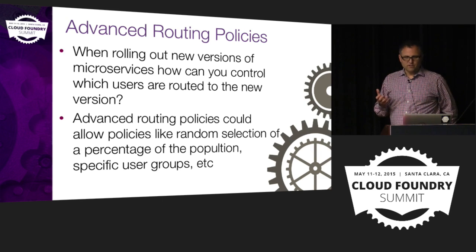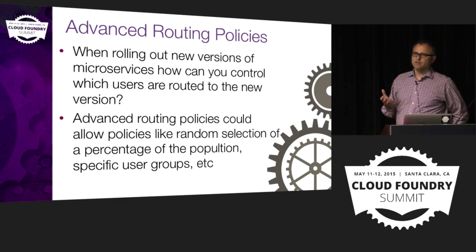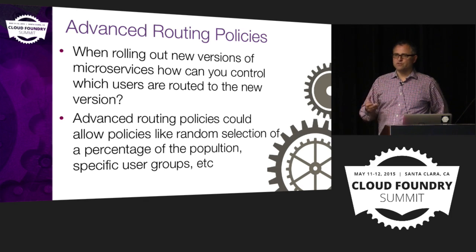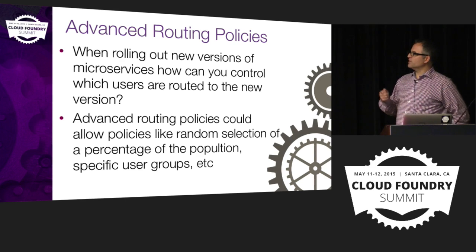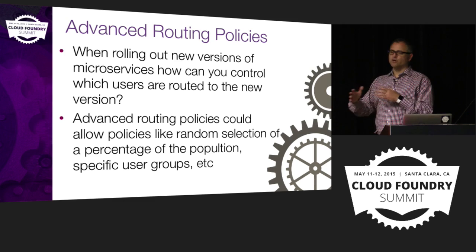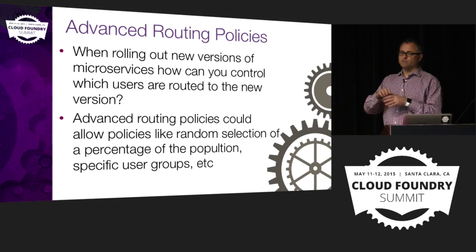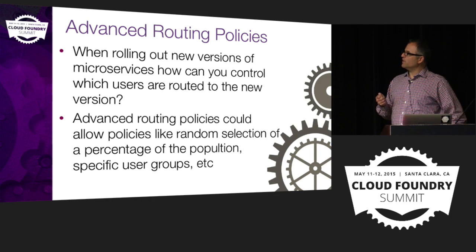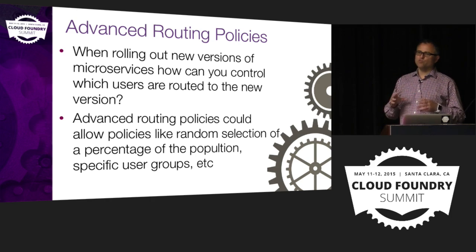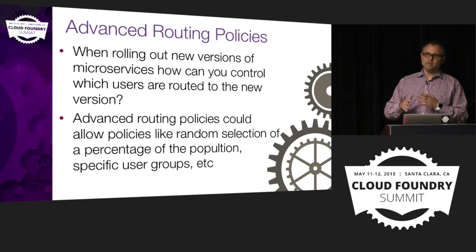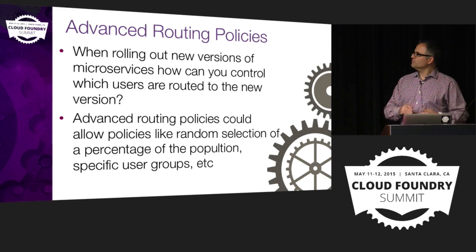Advanced routing policies are another key area, and there's a lot of work happening within the GoRouter community to enable this. We want to have A/B testing as we roll out different microservices. We want to be able to set policy to route some percentage of requests to the new version and some percentage to the old version, and maybe target specific user groups. This requires the right extensions in the GoRouter to enable those advanced routing selection policies. An interesting additional problem is whether we need coordination across different microservices for A/B testing — if we select one user for A/B testing, does it affect which other services we select for that same user?